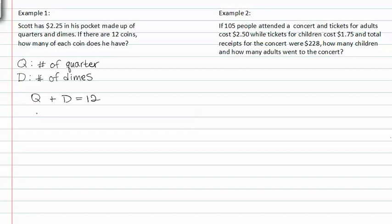From here, we can write another equation. This one states the values for the number of quarters and the value for the number of dimes. We know that a quarter is worth twenty-five pennies, and we know a dime is worth ten pennies. So, this represents the value of the money in his pocket. Since he has two dollars and twenty-five cents, it represents two hundred and twenty-five pennies.